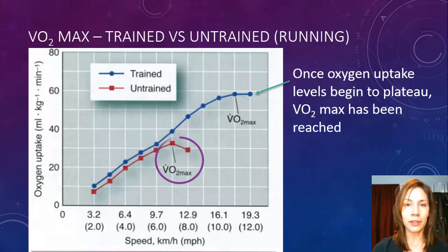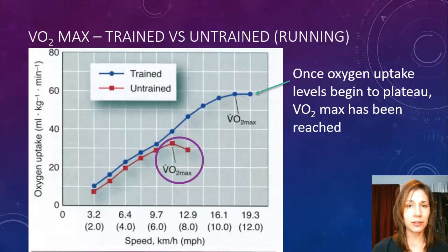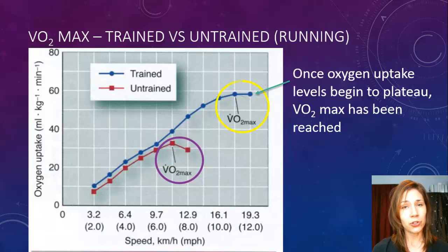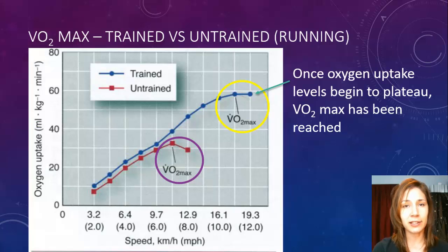The red line represents an untrained athlete whose VO2max is around 30 on the graph. Comparing that to the trained individual, theirs is just below 60 — almost double. So you can see what training actually does; you can't leave it up to just genetics and age, training definitely has an enormous impact.